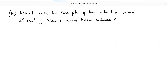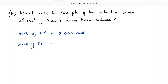Part B: what will be the pH of the solution when 29 centimetres cubed of sodium hydroxide have been added? We start in exactly the same way. The number of moles of hydrogen ions hasn't changed, so I know that to be 0.002 moles. Moles of hydroxide ions equals concentration times volume: 0.1 times 0.029, giving 0.0029 moles.